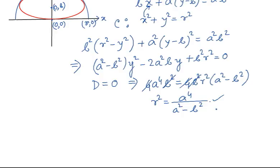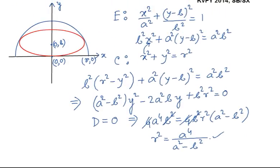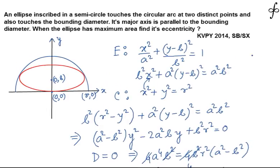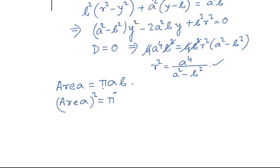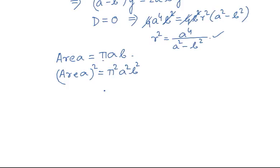Now we need to maximize the area of the ellipse. The area of an ellipse is π·A·B. When A equals B it becomes a circle with area πA². To simplify the maximization, we square the area, giving π²A²B², and maximize this expression.